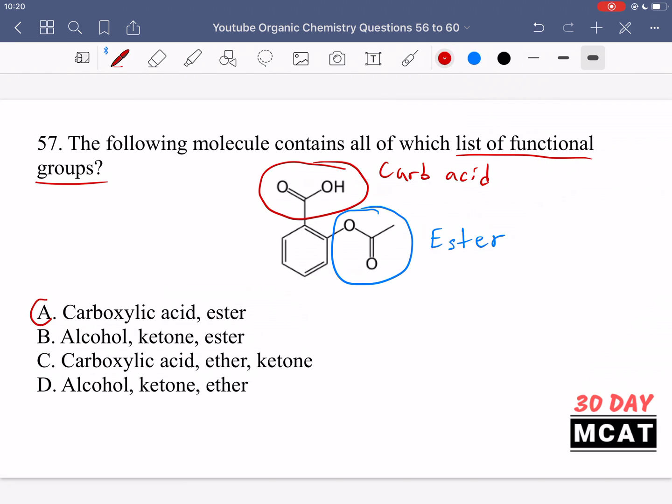And then this one over here where we have a carbonyl that's connected to an oxygen, and then there's an R group on the oxygen, that is called an ester. So option A, that is correct. We have the carboxylic acid, we have an ester. Option B is incorrect. We do not have an alcohol. An alcohol would just be a carbon with some OH group attached, but then the carbon that the OH is attached to, it should not have a double bonded O.